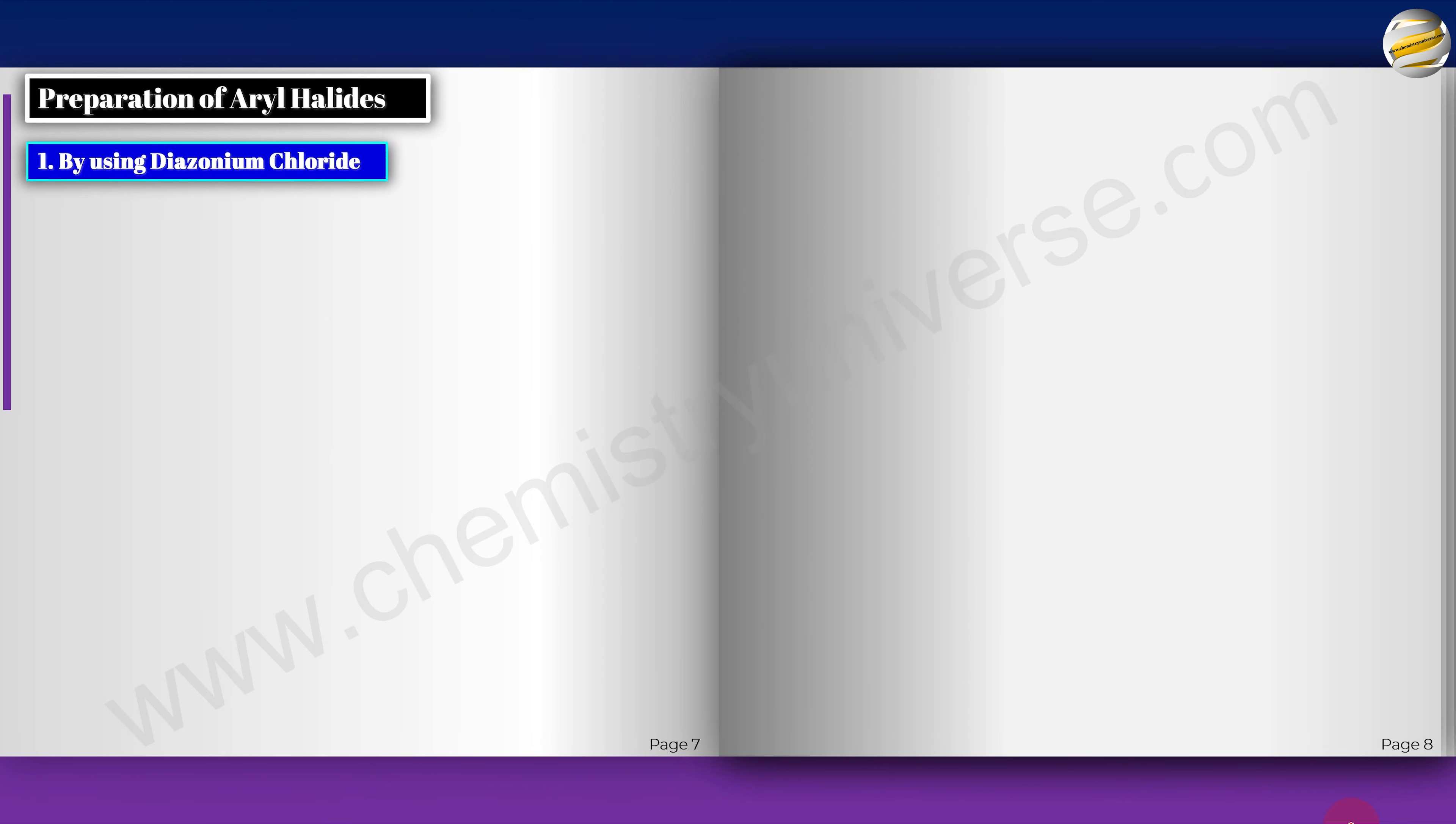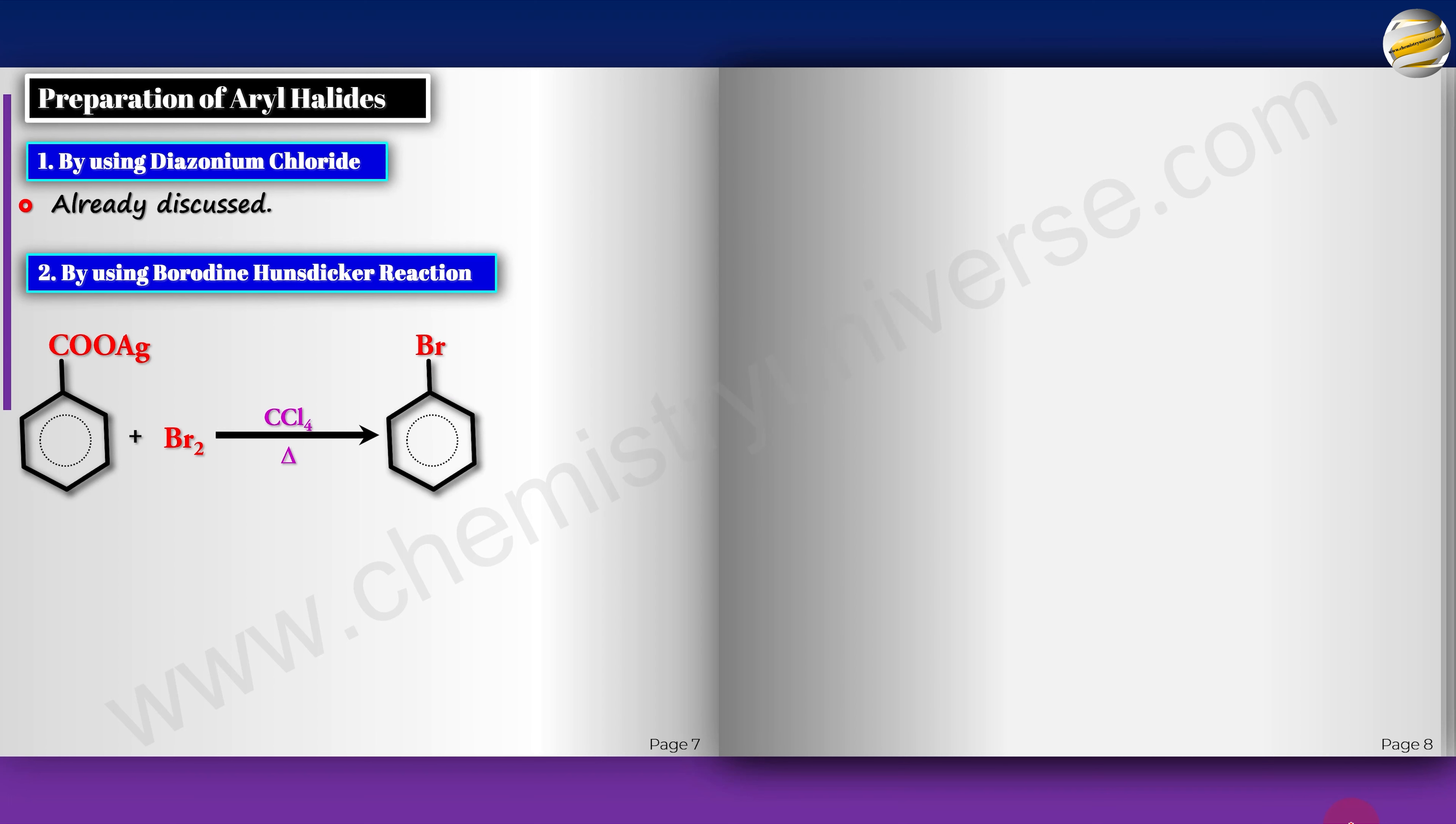With that, we have the preparation of aryl halides. I think we have done sufficient preparation. One is by using benzene diazonium chloride - I got fluoro, chloro, iodo, bromo, everything. We have already discussed this. Then we use the Borodine-Hunsdiecker reaction. You have the silver salt of a carboxylic acid, bromine, CCl4 and heat. You will get Br right on top. AgBr goes off and CO2 leaves.